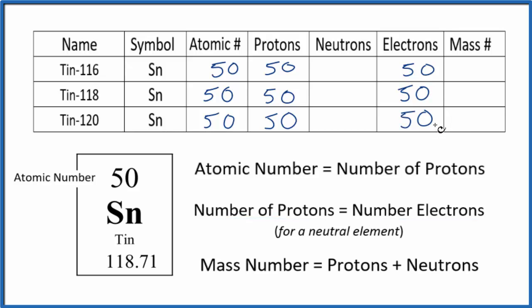So far, everything is the same. There's no difference between these isotopes. But with isotopes, the difference is in the neutrons. So to find the neutrons, we first can figure out the mass number. That's this number right here.